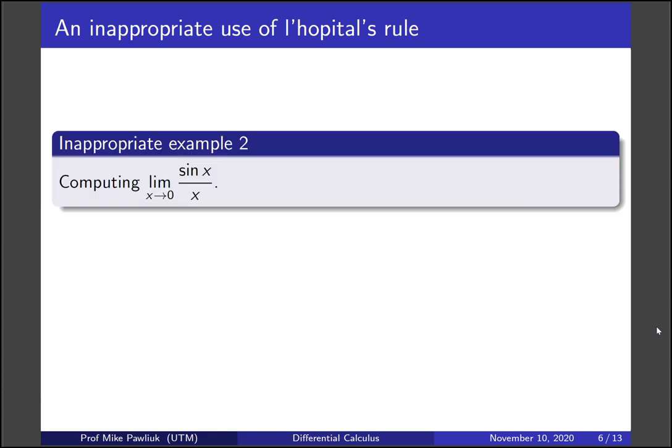Let's look at another example that's an inappropriate use of L'Hopital's rule. Let's compute the limit as x goes to 0 of sin x over x. If we were to use L'Hopital's rule, we notice that this is a limit of the form 0 over 0. The derivative of the numerator is cosine, the derivative of the denominator is 1. And then we can actually evaluate this, the numerator goes to 1.